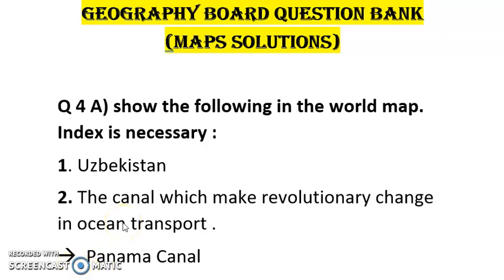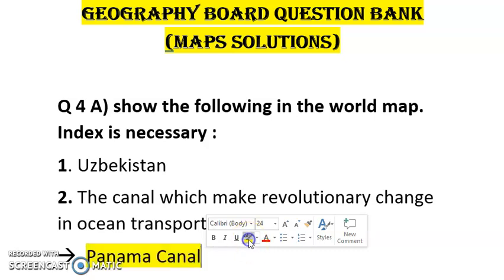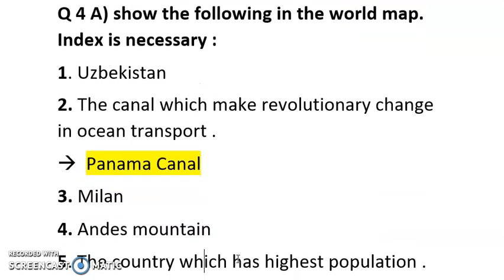So there are some statements. In the first question they directly gave the name, like Uzbekistan. In the second they gave a statement: which canal makes a revolutionary change in ocean transportation? So you should know which canal it is — whether it is Suez Canal, Panama Canal, or some other canal. The answer here is Panama Canal. So the answer is Panama Canal and you have to denote it on the map.